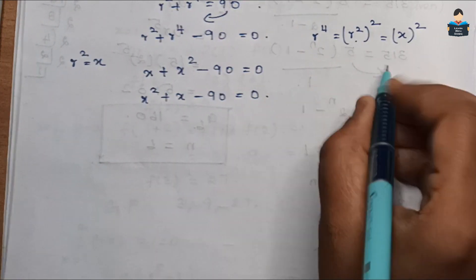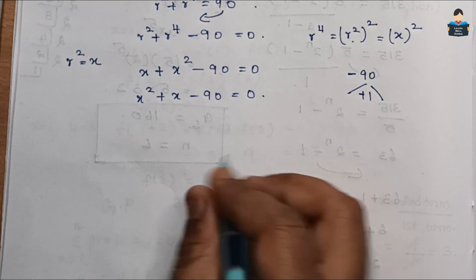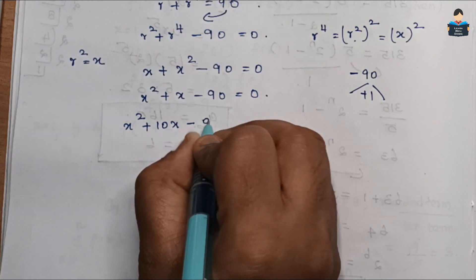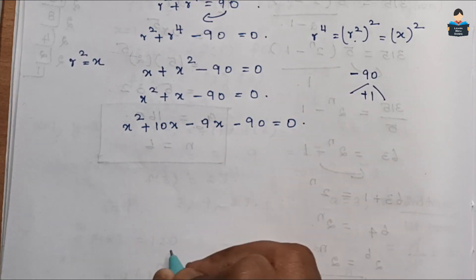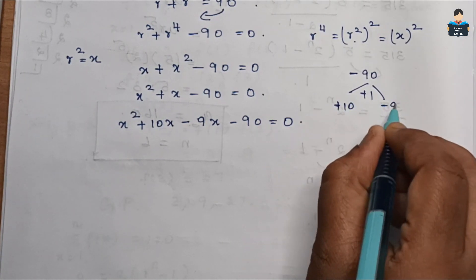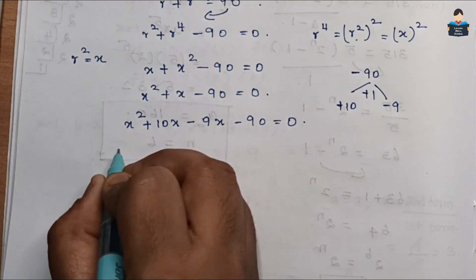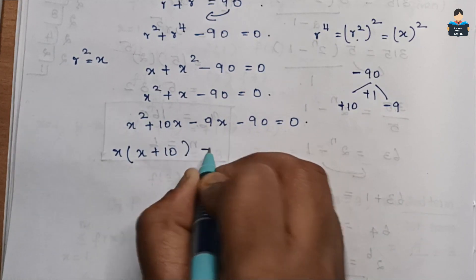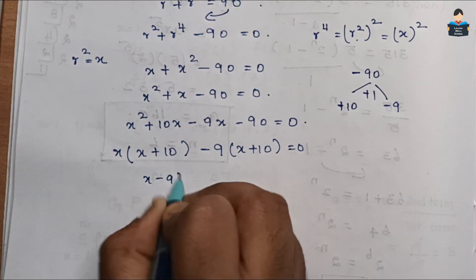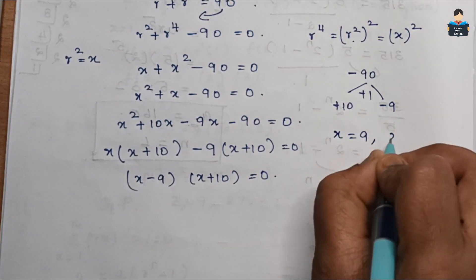Now splitting the middle term: multiply to get −90. We find two numbers: +10 and −9. So x² + 10x − 9x − 90 = 0.